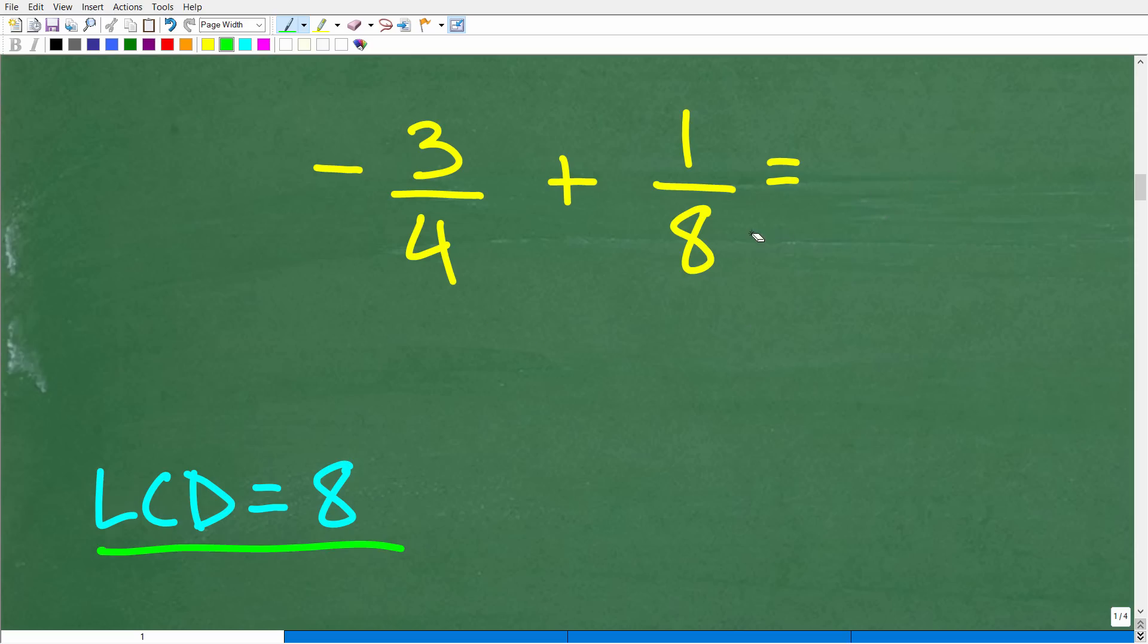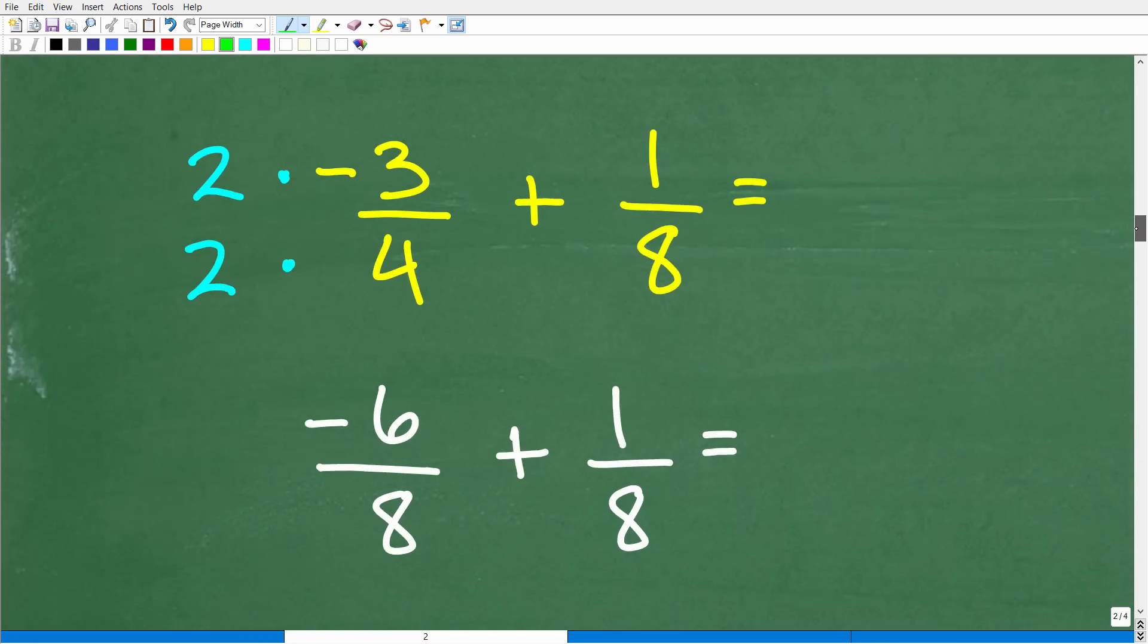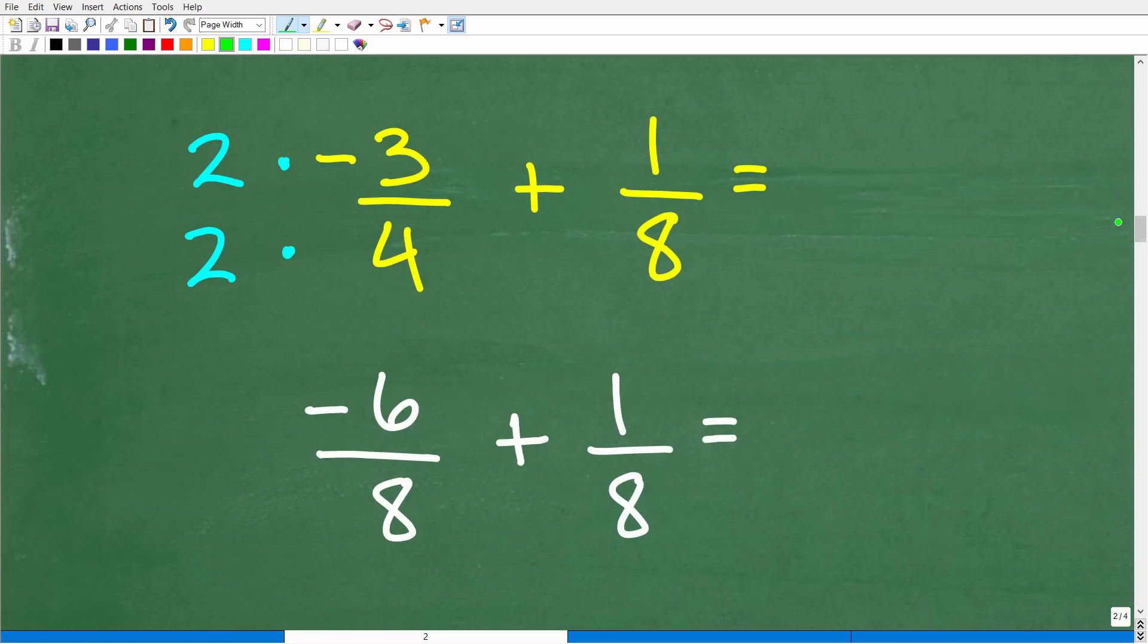Alright, so that means that we need to change this fraction right here such that it has a denominator of 8. Alright, so we're not talking about difficult math here. Let's go ahead and change this denominator into an 8. So how do we change a 4 into an 8? Well, that's easy. All we need to do is multiply by 2.